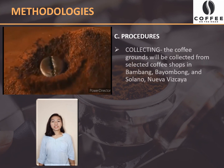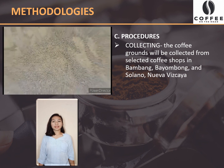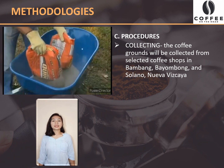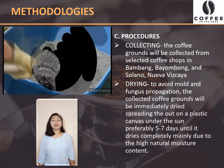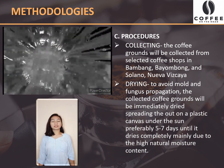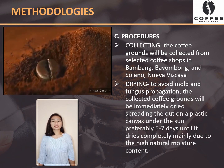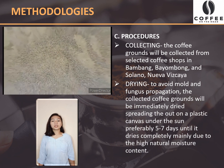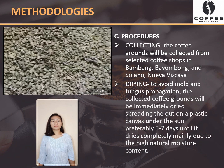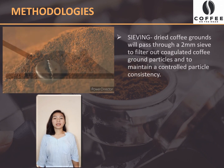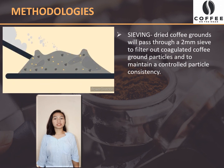Procedures: First is collecting. The coffee grounds will be collected from selected coffee shops in Bambang, Bayambong, and Solano, Nueva Vizcaya. Next is drying. To avoid mold and fungus propagation, the collected coffee grounds will be immediately dried by spreading them out on a plastic canvas under the sun, preferably 5 to 7 days until completely dry, mainly due to the high natural moisture content. Next is sieving. Dried coffee grounds will pass through a 2 millimeter sieve to filter out coagulated particles and to maintain a controlled particle consistency.